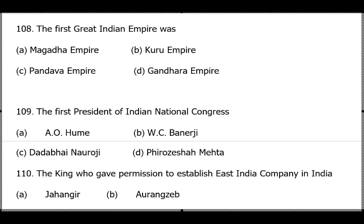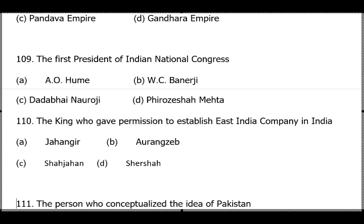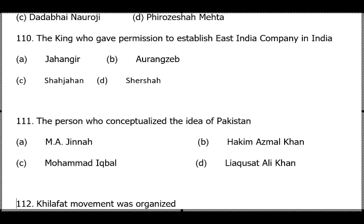The king who gave permission to establish the East India Company was Jahangir. During 1605, the English ambassador Thomas Roe came to his court; William Hawkins also arrived later. They were given permission to open a settlement in Surat, Gujarat.